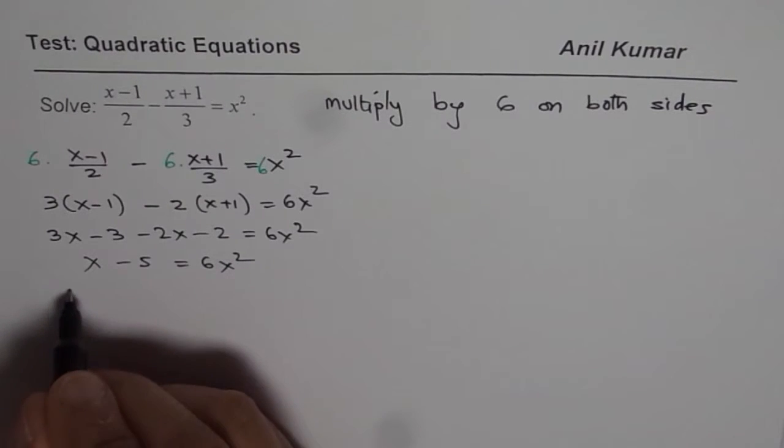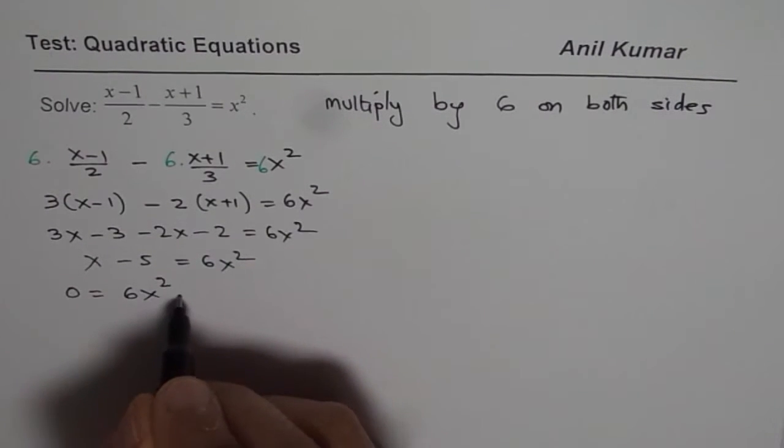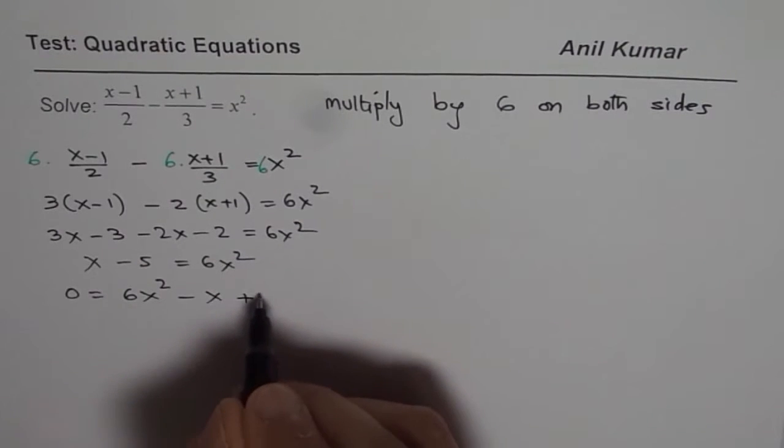Let us bring these terms to the right side. So we get 0 = 6x² - x + 5.